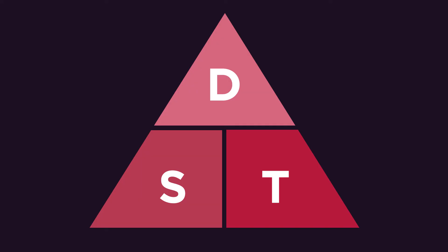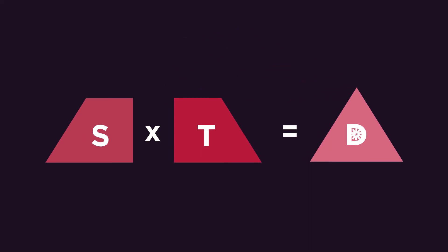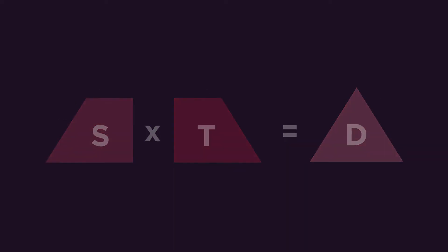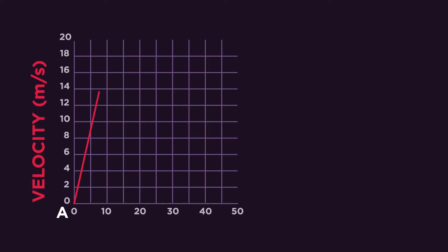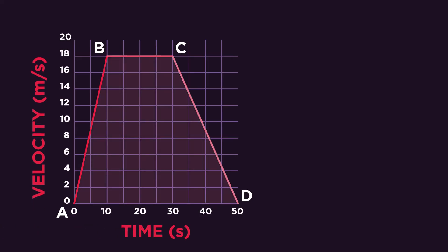In contrast to distance-time graphs, velocity-time graphs have an extra special feature. Because the velocity of an object is found by dividing distance by time, we can rearrange and find distance by multiplying velocity and time. On our graph, these values multiplied are equal to the area under the graph.